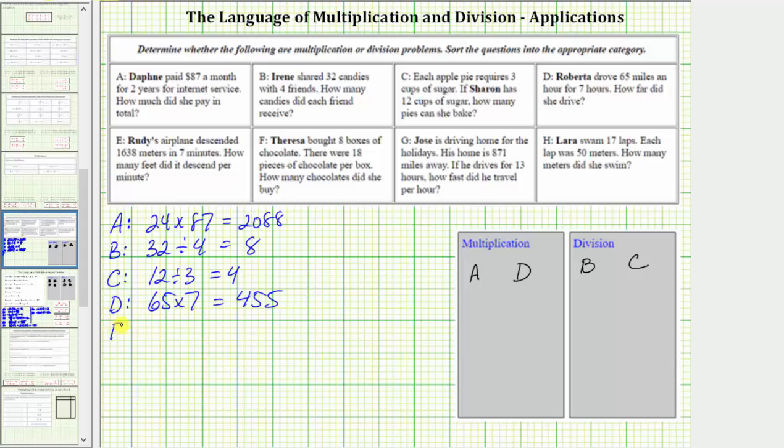For E, Rudy's airplane descended 1638 meters in seven minutes. How many feet did it descend per minute? So the given rate is the descent of 1638 meters per seven minutes. To represent the descent, we would use negative 1638. And therefore, to determine the descent per minute we divide.